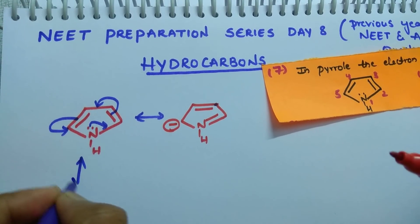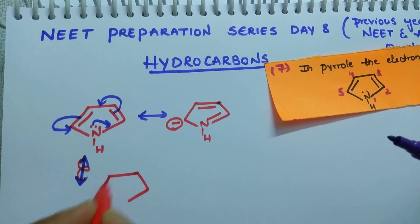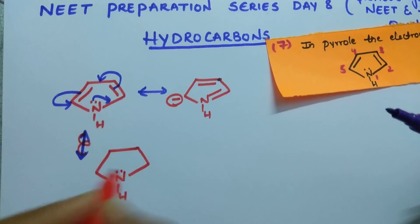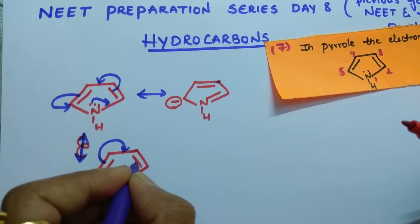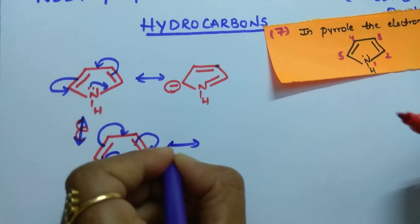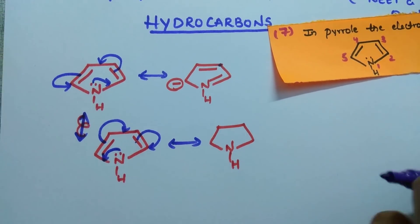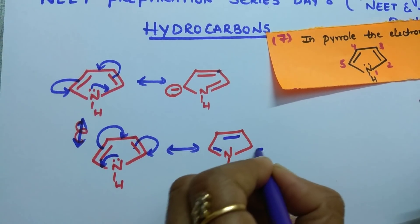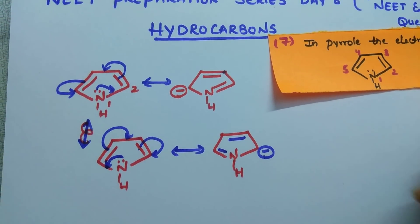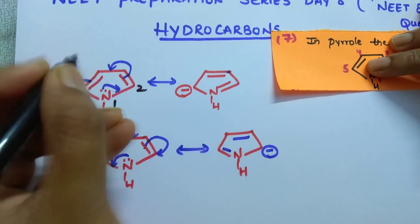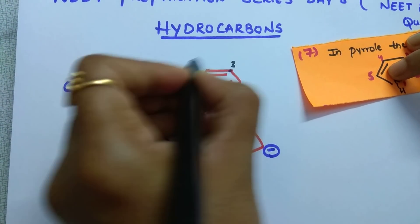If, for example, the shifting takes place in the anti-clockwise direction. See, I will draw here. Then, these two shift here. Then, these two will shift here. Then, what is the structure you get? Slowly, I will draw. Then, here, here, negative charge. For example, give numbering 1, 2, 3, 4, 5. Then, 1, 2, 3, 4, 5.